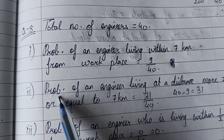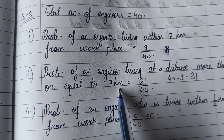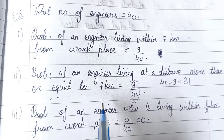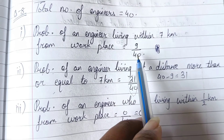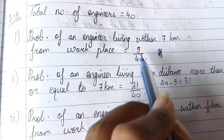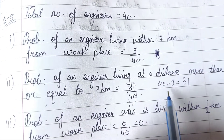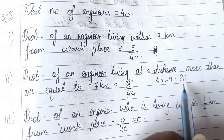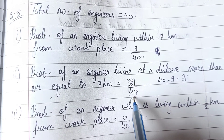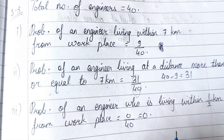Question number 2 is the probability of an engineer living at a distance more than or equal to 7 km. We already found less than 7 km gives 9 engineers. So more than or equal to 7 will be 40 minus 9, which is 31. So the number of possible outcomes is 31 upon total number of outcomes 40, giving 31 by 40 as the answer.